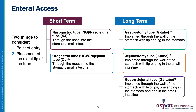When providing enteral nutrition, another important factor is the type of available enteral access. There are two factors to consider: the point of entry and placement of the distal tip of the tube. For short-term access, there are nasogastric and nasojejunal tubes entering through the nose into the stomach or small intestine, and orogastric or orojejunal tubes entering through the mouth. For longer-term access, a gastrostomy tube is implanted through the wall of the stomach with the tip ending in the stomach. A jejunostomy tube is implanted through the stomach wall with the tip ending in the small intestine. A gastrojejunal tube is implanted through the stomach wall with two tips — one ending in the stomach and one in the small intestine.